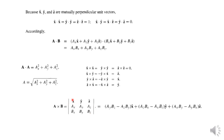Taking this determinant: the x̂ component gives ay·bz − az·by; the ŷ component (with a negative sign due to cofactor expansion) gives −(ax·bz − az·bx), which is az·bx − ax·bz; and the ẑ component gives ax·by − ay·bx. This is the cross product in component form.